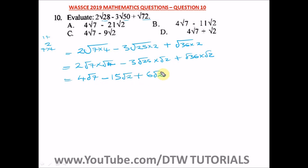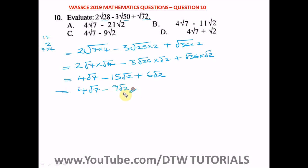We can simplify further because we have √2 in both remaining terms. Combining minus 15 and plus 6 gives minus 9. So our final answer is 4√7 minus 9√2. We cannot simplify further because the square root of 7 and the square root of 2 are different. This is our answer, and the correct option is option C.